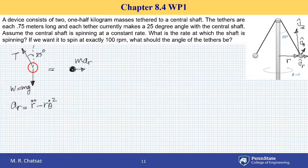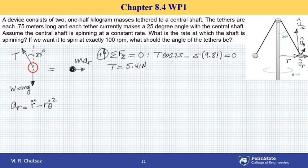Observe that in vertical direction I can write net force in z direction equal to zero since there is no vertical motion. I choose up to be positive. This gives me T cosine of 25 minus mg, which is 0.5 times 9.81, equal to zero. Solving this equation for tension T, I get a force of 5.41 newtons.